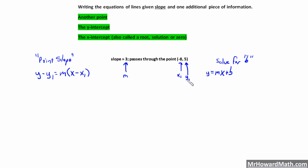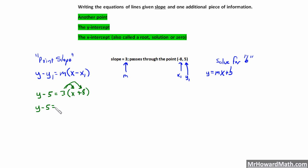Let's use the point-slope method first. We have y minus y1, which is y minus 5, equals slope m of 3, times the quantity x minus x1, which is minus negative 8 — that becomes plus 8. Next, we distribute: 3 times x is 3x, 3 times 8 is 24. Then we add 5 to both sides, and we get y equals 3x plus 29.